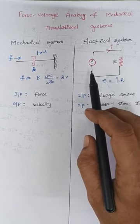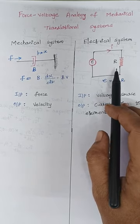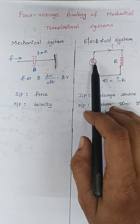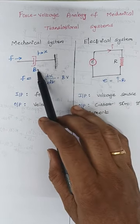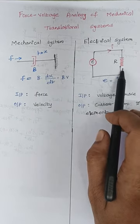For the equivalent electrical system, in the place of force I have a voltage, and in the place of the dashpot I have a resistor R.